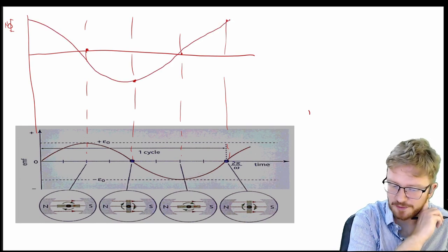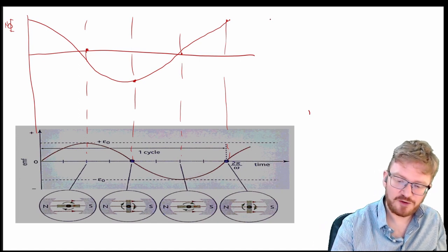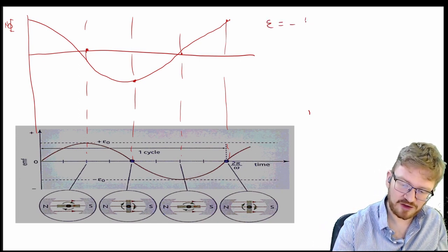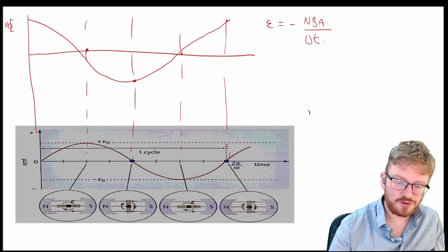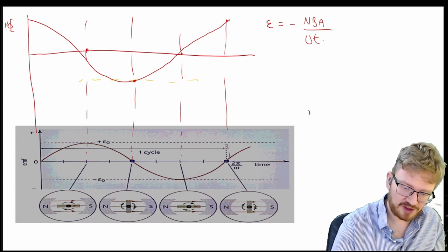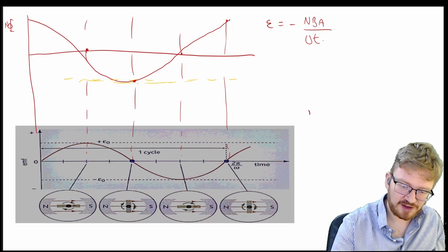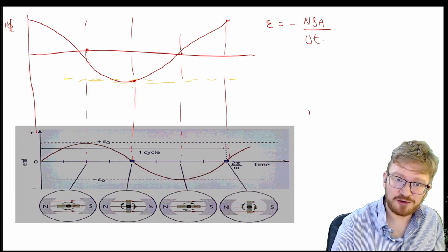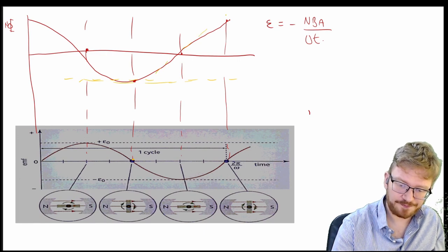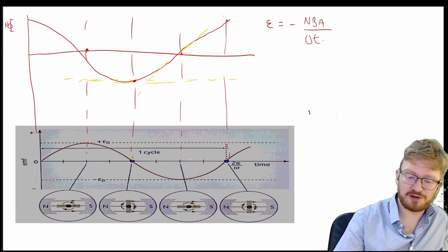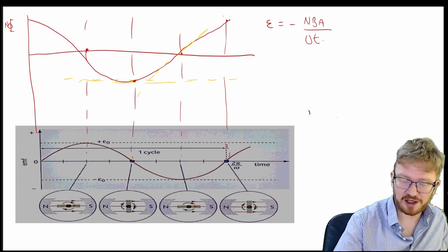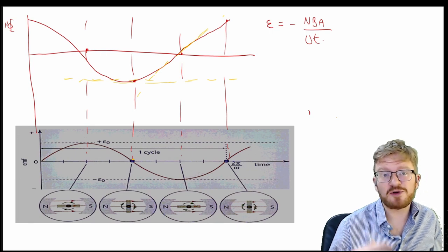If you remember that EMF is minus NBA over delta T. So it's the rate of change of flux linkage. So if you think about the tangents to these at any one time, this explains why. Right at this point, I've just drawn a tangent to, the gradient is zero and that matches up with a zero on there. As we go over here, the gradient becomes larger. I've actually drawn this upside down. Sorry about that. I should have drawn this the other way around. So you get a larger gradient though. Just be aware of that because that's something that does come up in the exam.